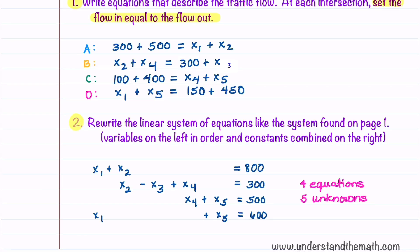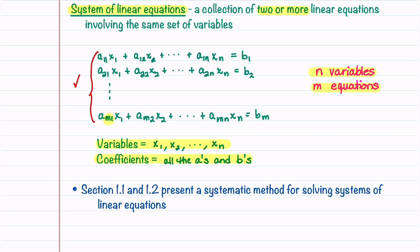The second step is we're going to rewrite this linear system of equations to be in the same form that we had on the first page. All the x's are on the left and all the constants are on the right hand side, and the x's are arranged from x1 all the way up to x5.